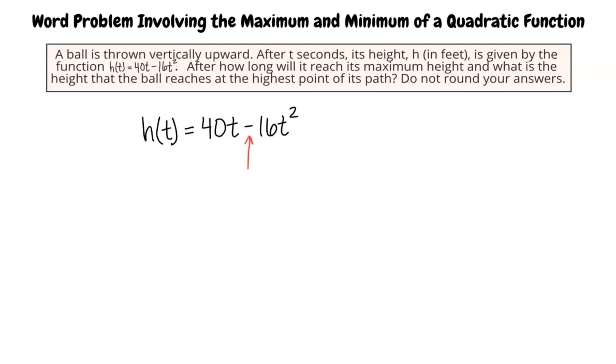We can tell that the function h represents a parabola that opens downward since the coefficient of the quadratic term is negative. Therefore, we know that the parabola's vertex is going to be the highest point on the parabola.